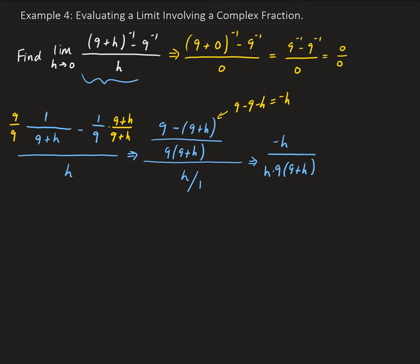This works out nicely because now the h's will cancel out, and that leaves us with negative one divided by nine times nine plus h. So the limit that we have becomes the limit of minus one over nine times nine plus h.